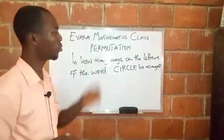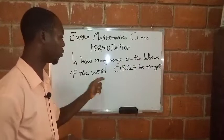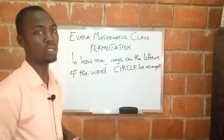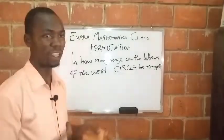Welcome back. Let's quickly see in how many ways we can arrange the letters of this word circle. This can be done using permutation. You know permutation is all about arrangement of items like letters or figures.